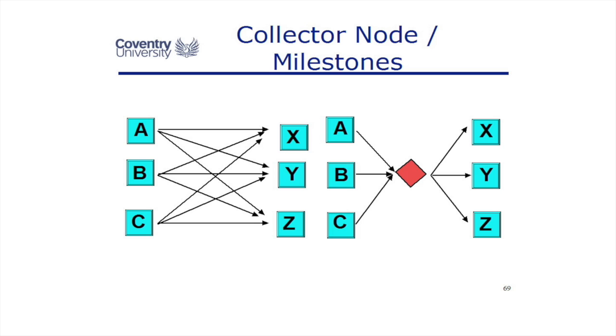Rather than have all of those lines, we could tidy it up with something called a collector node, or probably call it a milestone. We've created another milestone in our project plan that says A, B, and C have finished; we can now proceed with X, Y, and Z. So it's a drawing aid to tidy up a diagram—a collector node or a milestone.